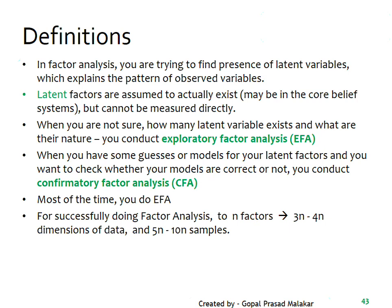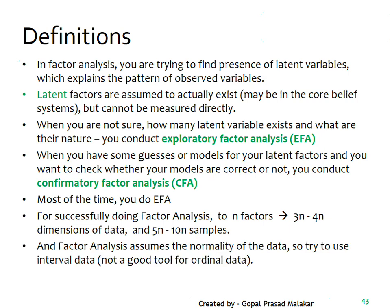For successfully doing factor analysis, if you are looking for say three factors, you should roughly look for at least 9 to 12 variables — 3 to 4 variables per factor — and at least 5 to 10 data points per variable, so at least 15 to 30 data points. Factor analysis also assumes normality of data.